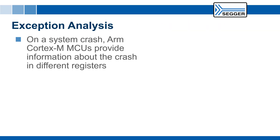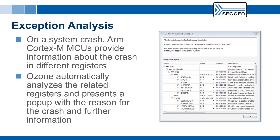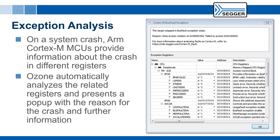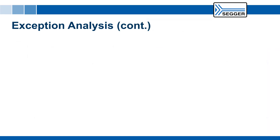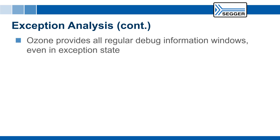On a system crash, ARM Cortex-M microcontrollers provide information about the crash in different registers. Manually gathering all information to get the reason for the crash can be cumbersome. When Ozone detects a fault, it automatically analyzes the related registers and presents a pop-up with the reason for the crash and further information, such as where the crash happened or which address could not be accessed. Once the reason for a crash is detected, the next step is to identify where it happened. In addition to the fault status registers, Ozone provides all regular debug information windows, even in exception state.